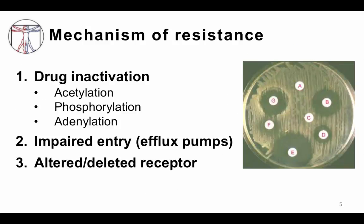The mechanism of resistance falls into three main groupings. You can inactivate the drug by acetylation, phosphorylation, or adenylation, and different organisms do it different ways. Even one organism may have multiple different mechanisms for resistance, making it hard to specify a single resistance mechanism.